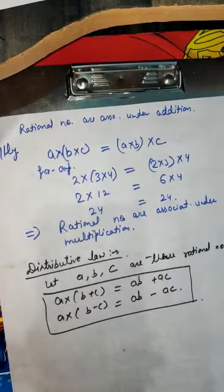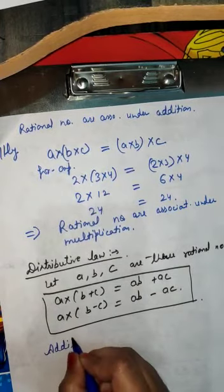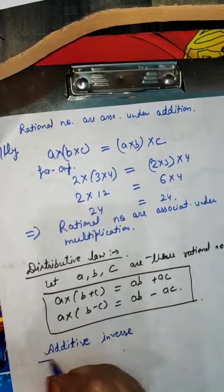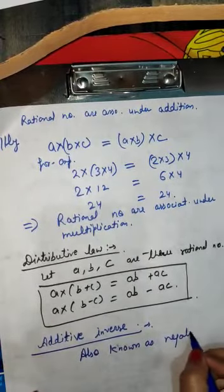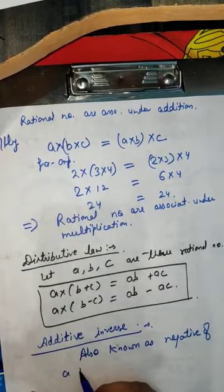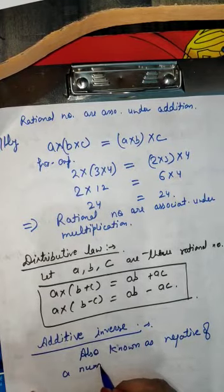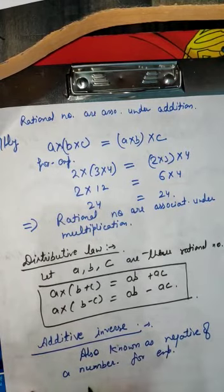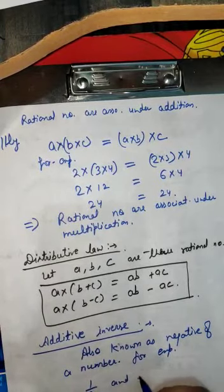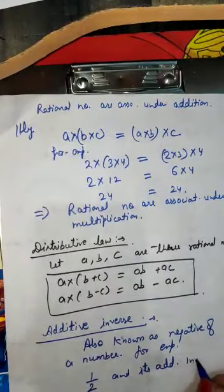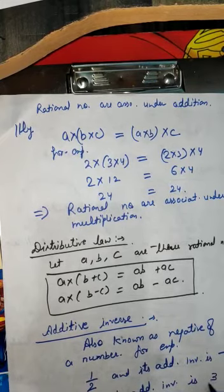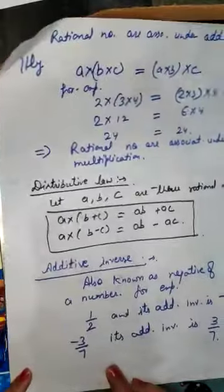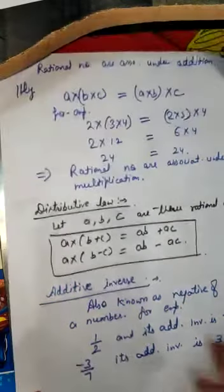Next is Additive Inverse, also known as the negative of a number. For example, 1 by 2 — its additive inverse is minus 1 by 2. If the number is minus 3 by 7, then its additive inverse is plus 3 by 7.